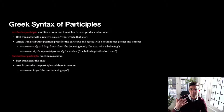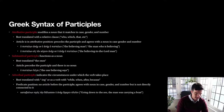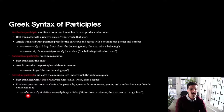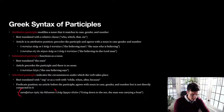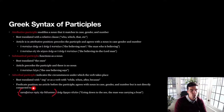A substantival participle — we're going to usually translate with something like 'the ones.' The article is going to precede the participle and there's going to be no other noun that is modified. An adverbial participle is going to stand on its own without an article before it. So 'going down to the sea,' the going down happens at the same time as 'the man was carrying a boat.' This adverbial participial phrase is telling us the circumstances under which the action of the verb happened — while going down to the sea, the man was carrying a boat.